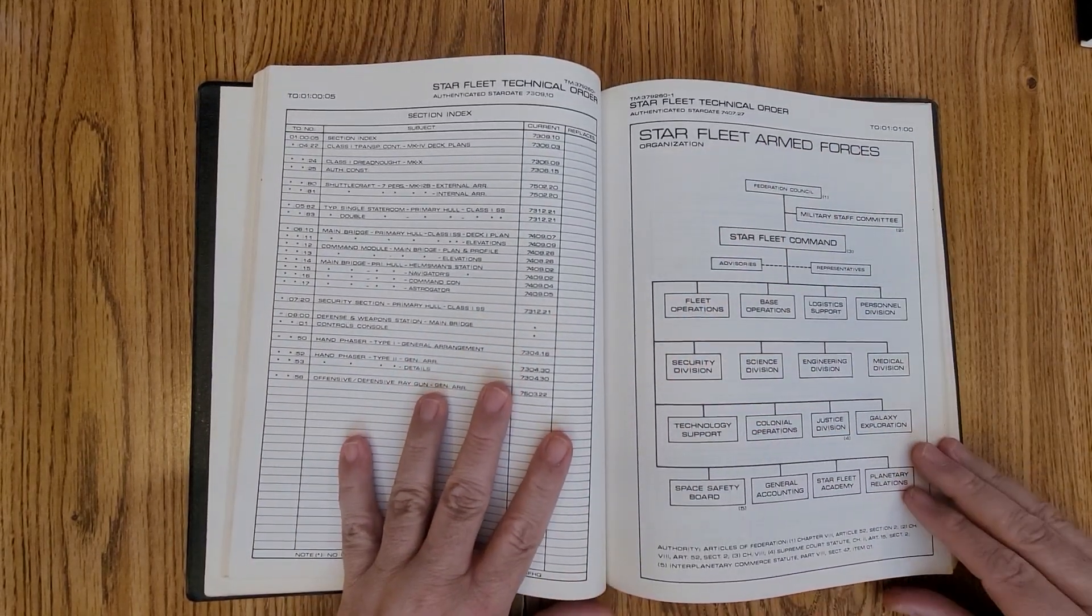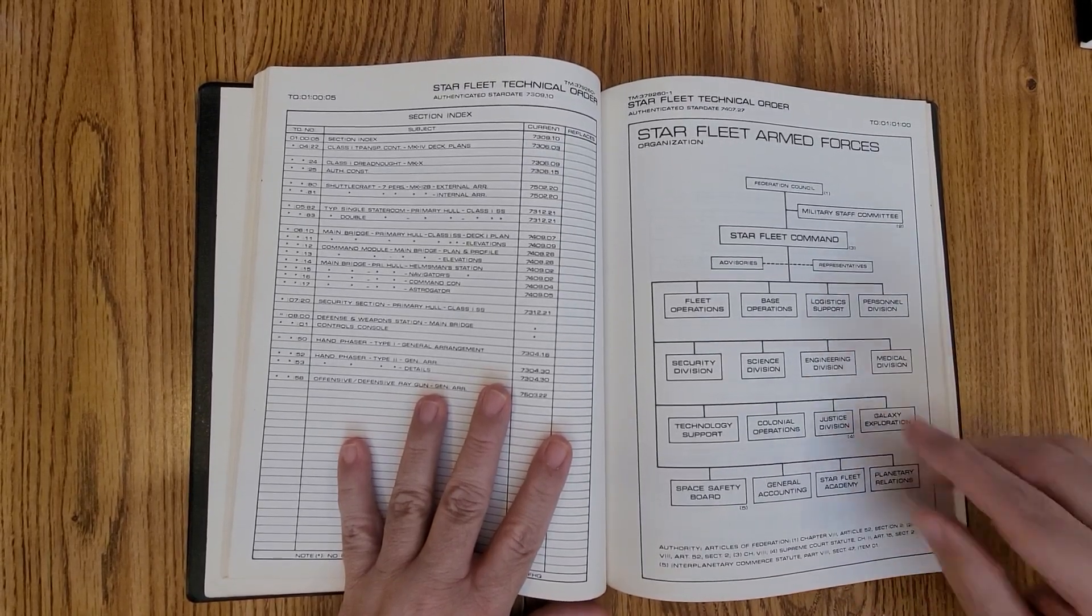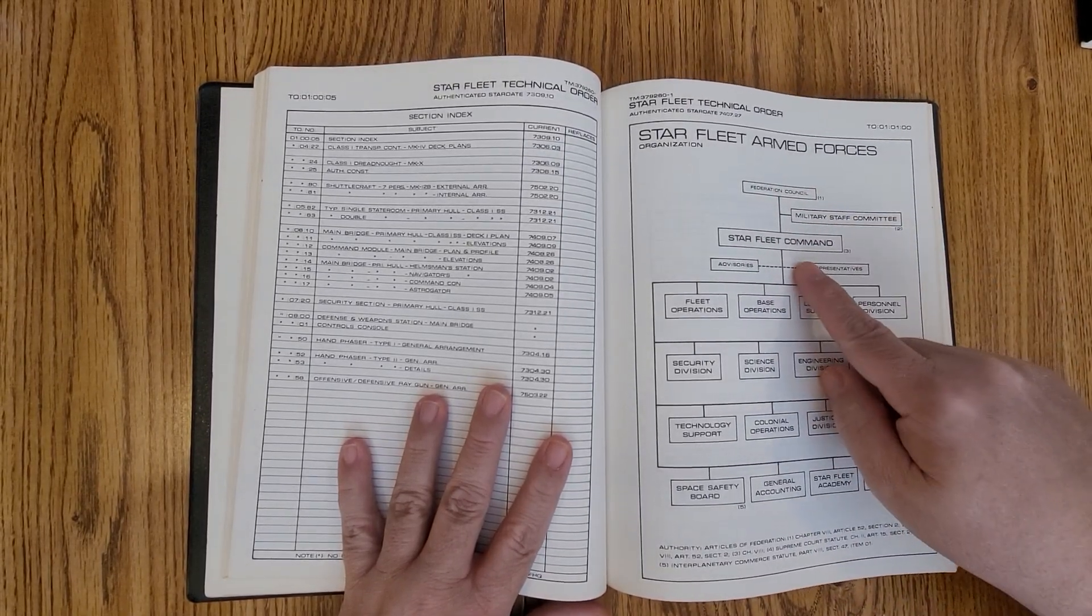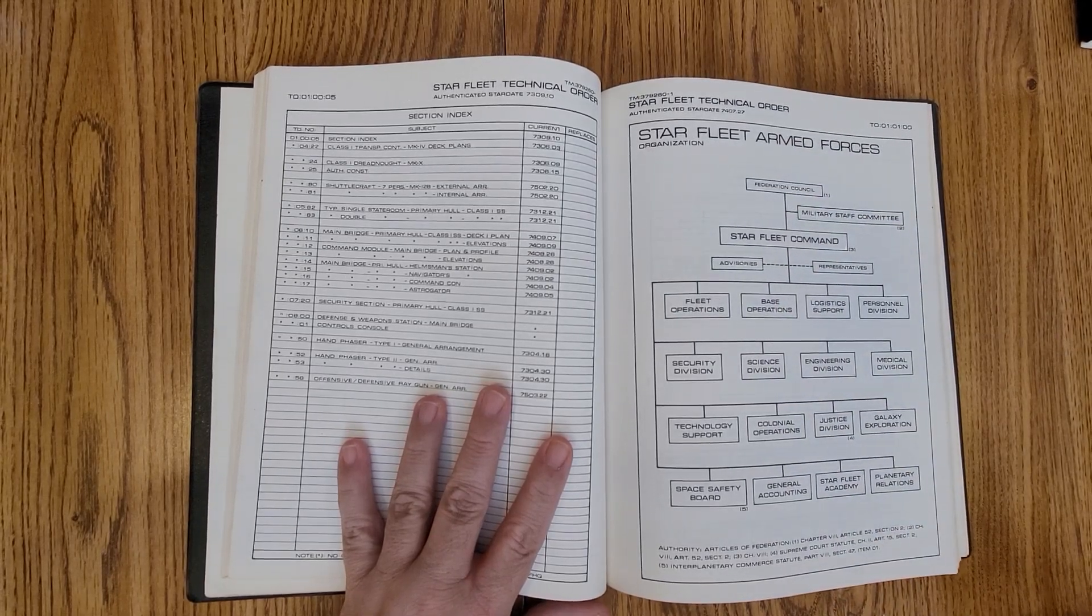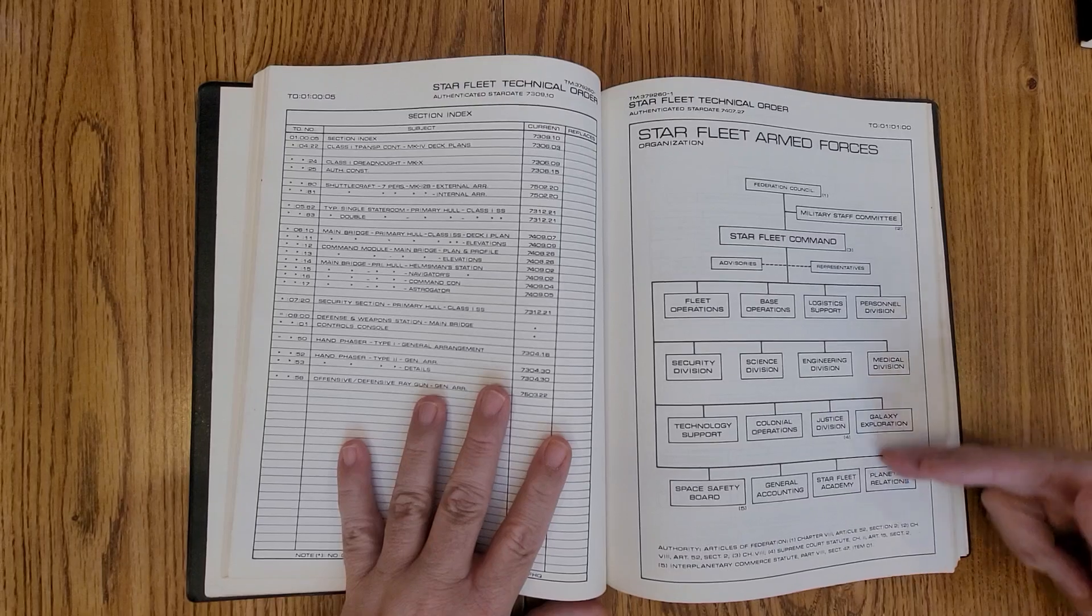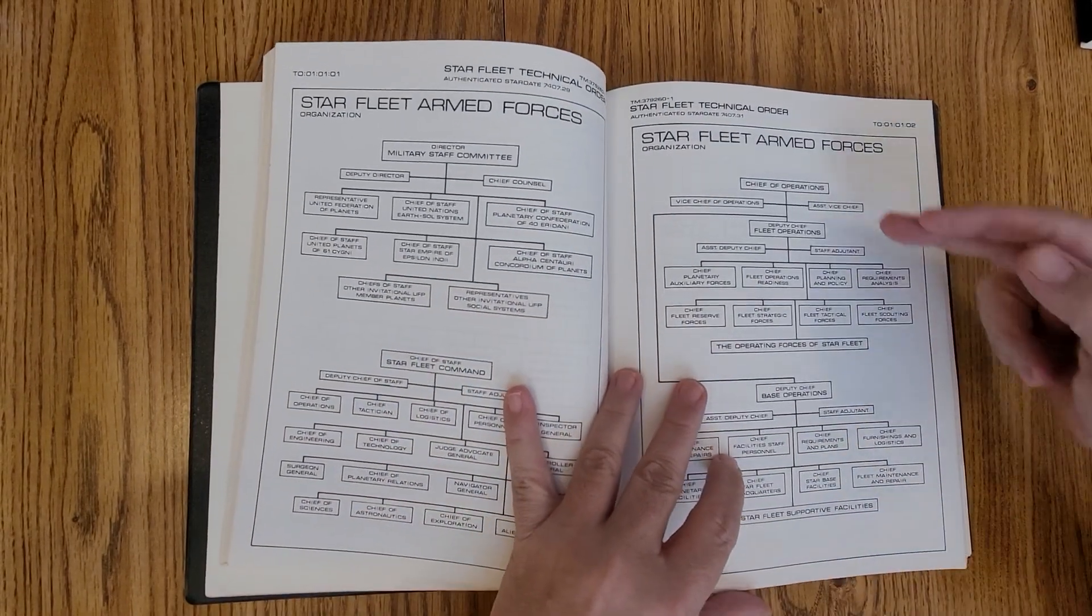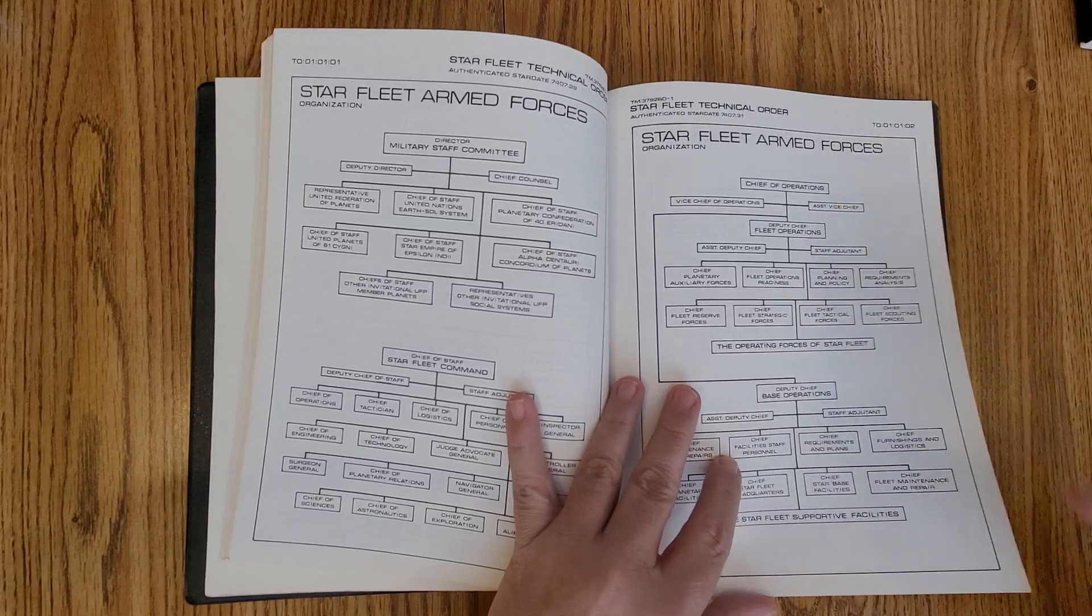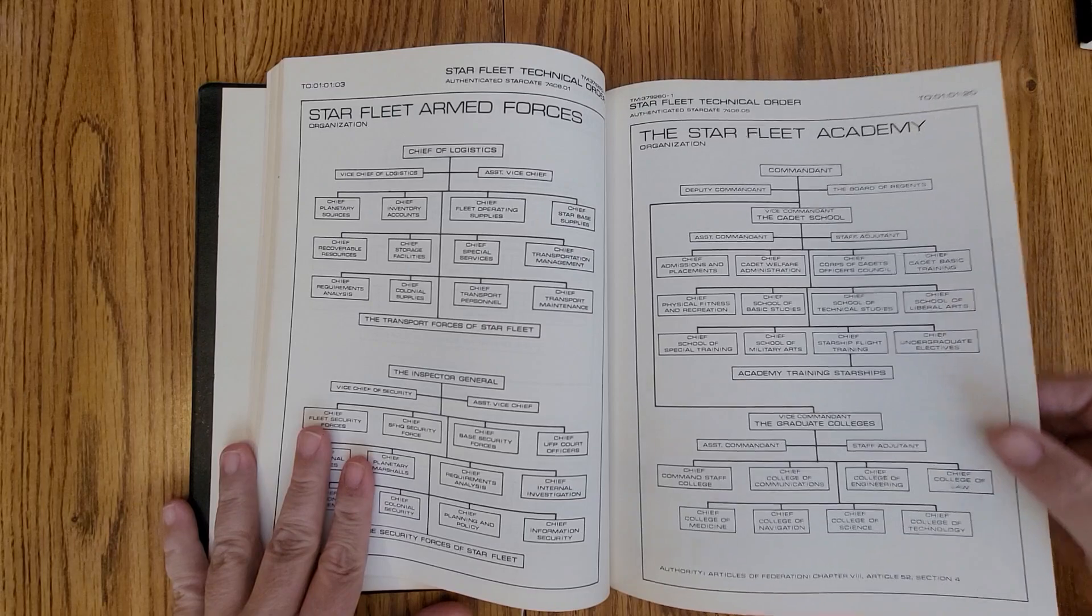This goes through the Starfleet Armed Forces. So you can see like their org chart, Starfleet Command, who reports military staff committee, which goes to the Federation Council. And then it breaks down who everybody kind of reports to. Same thing, Chief of Operations, it breaks down. This is just a wealth of knowledge.